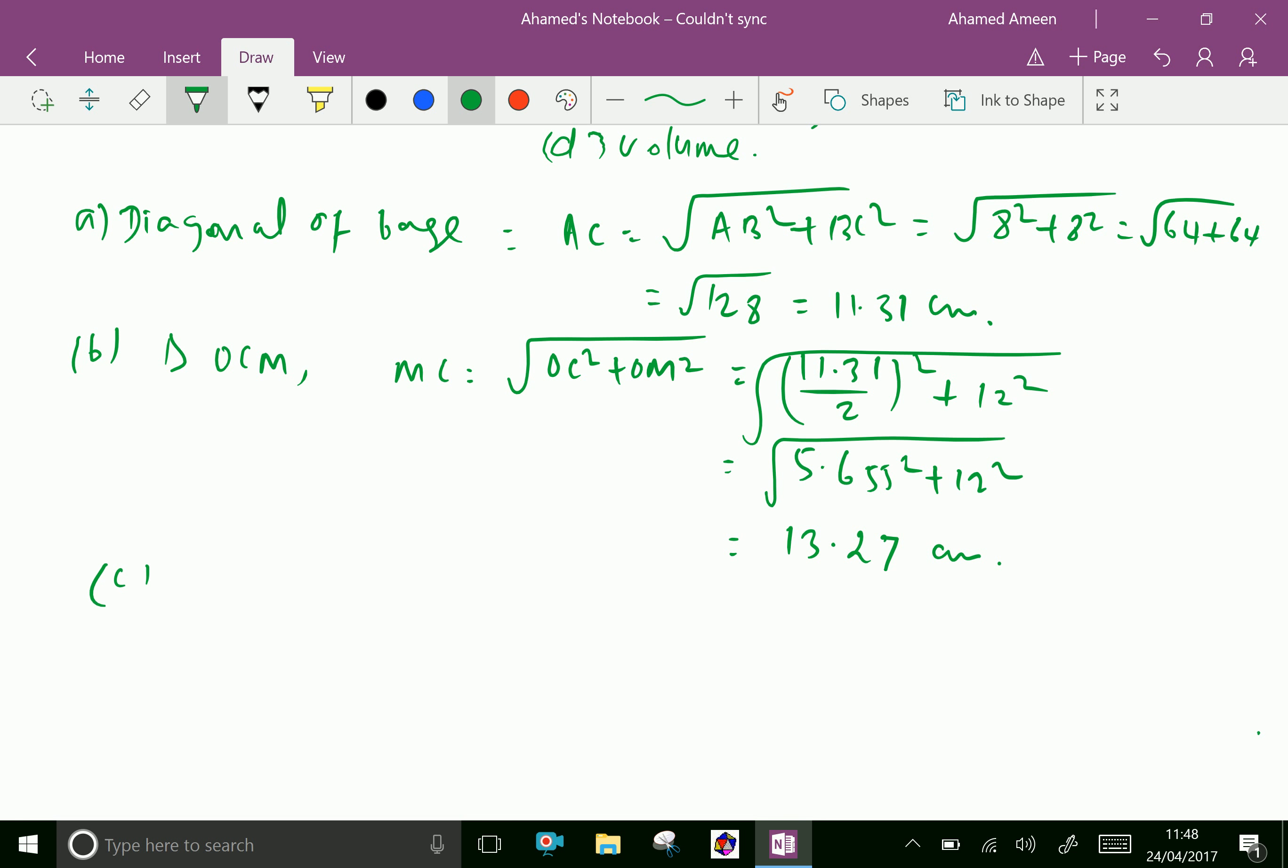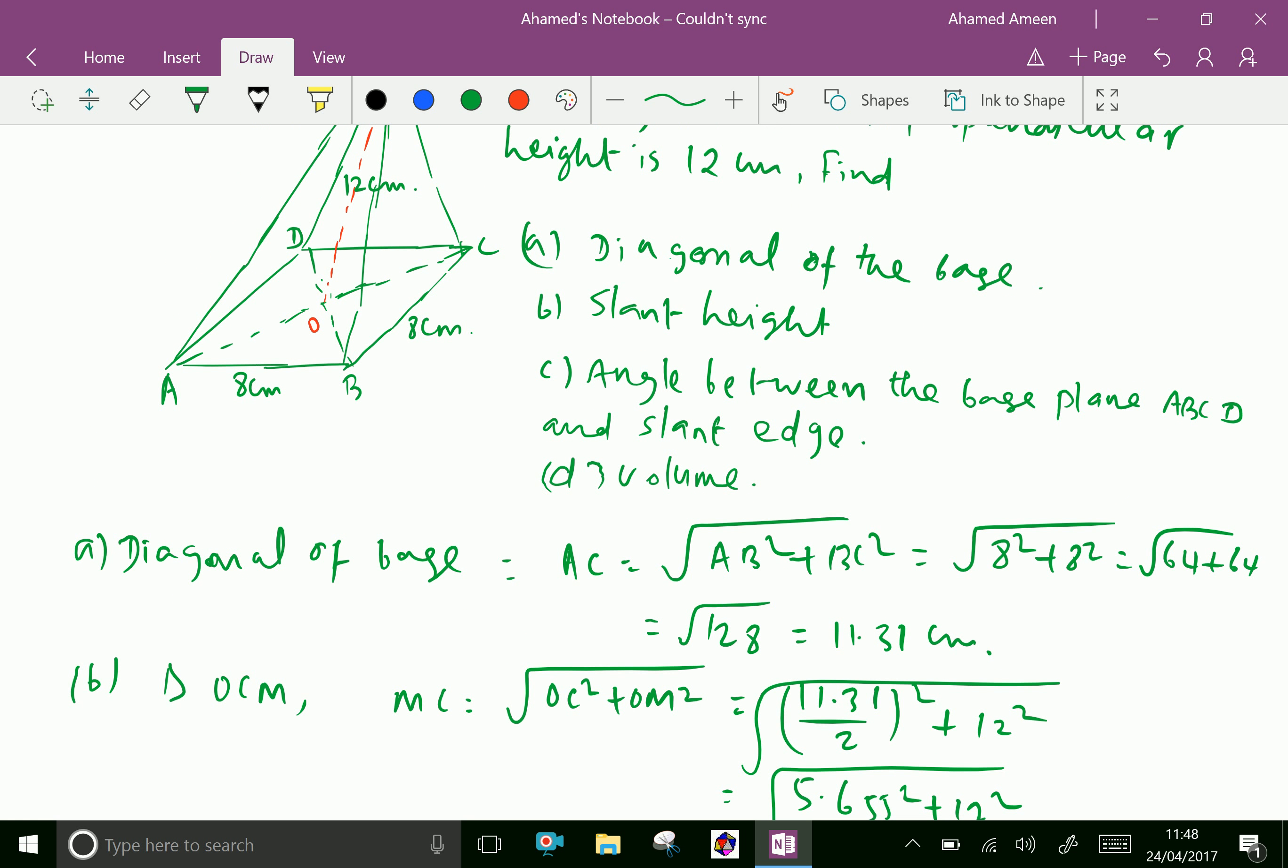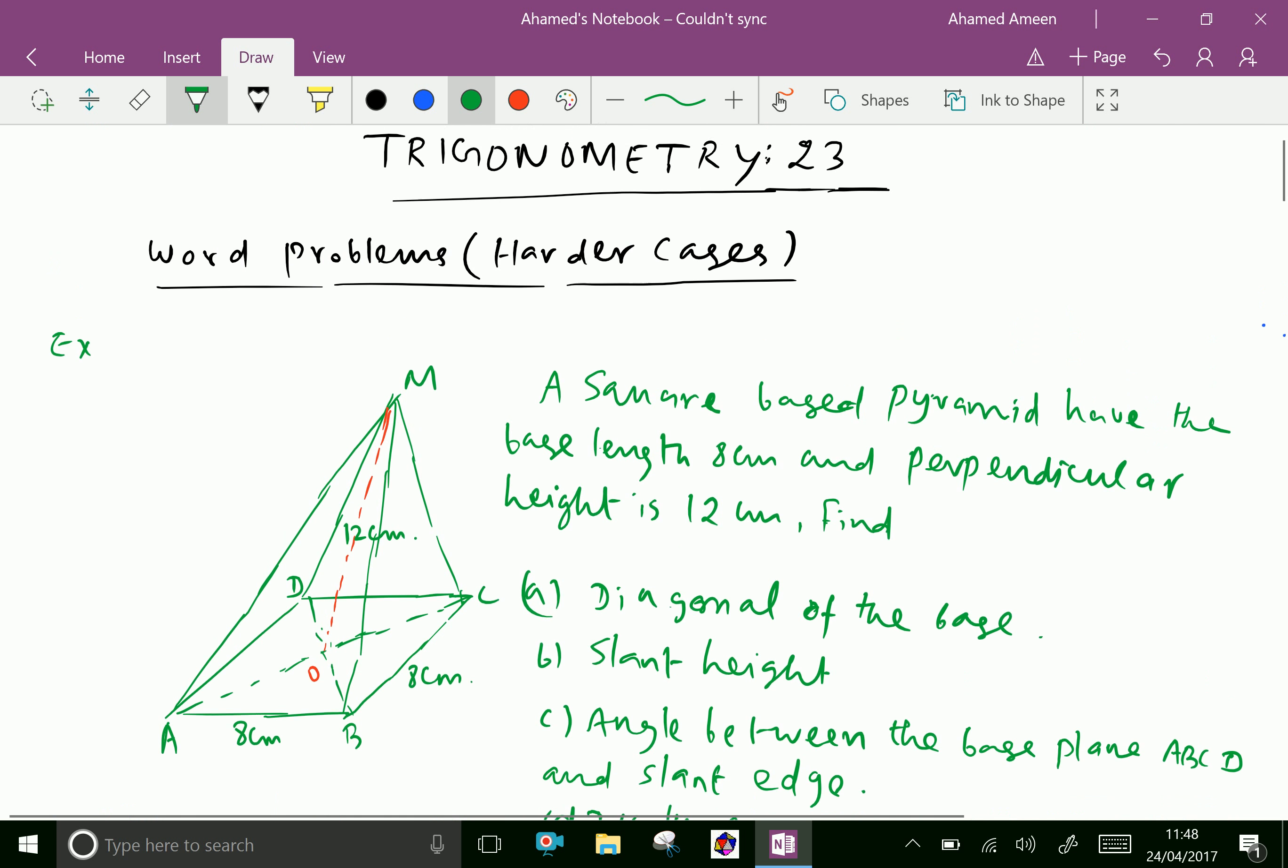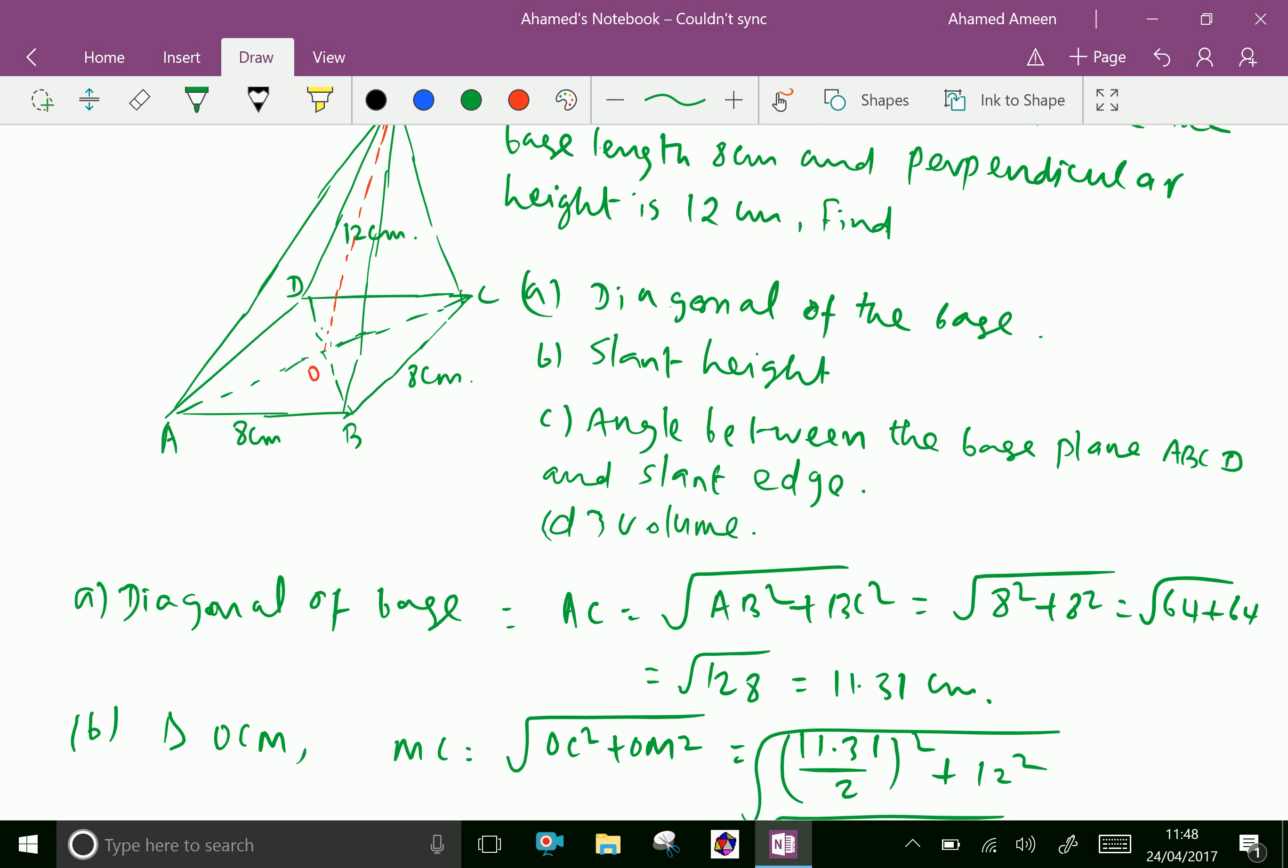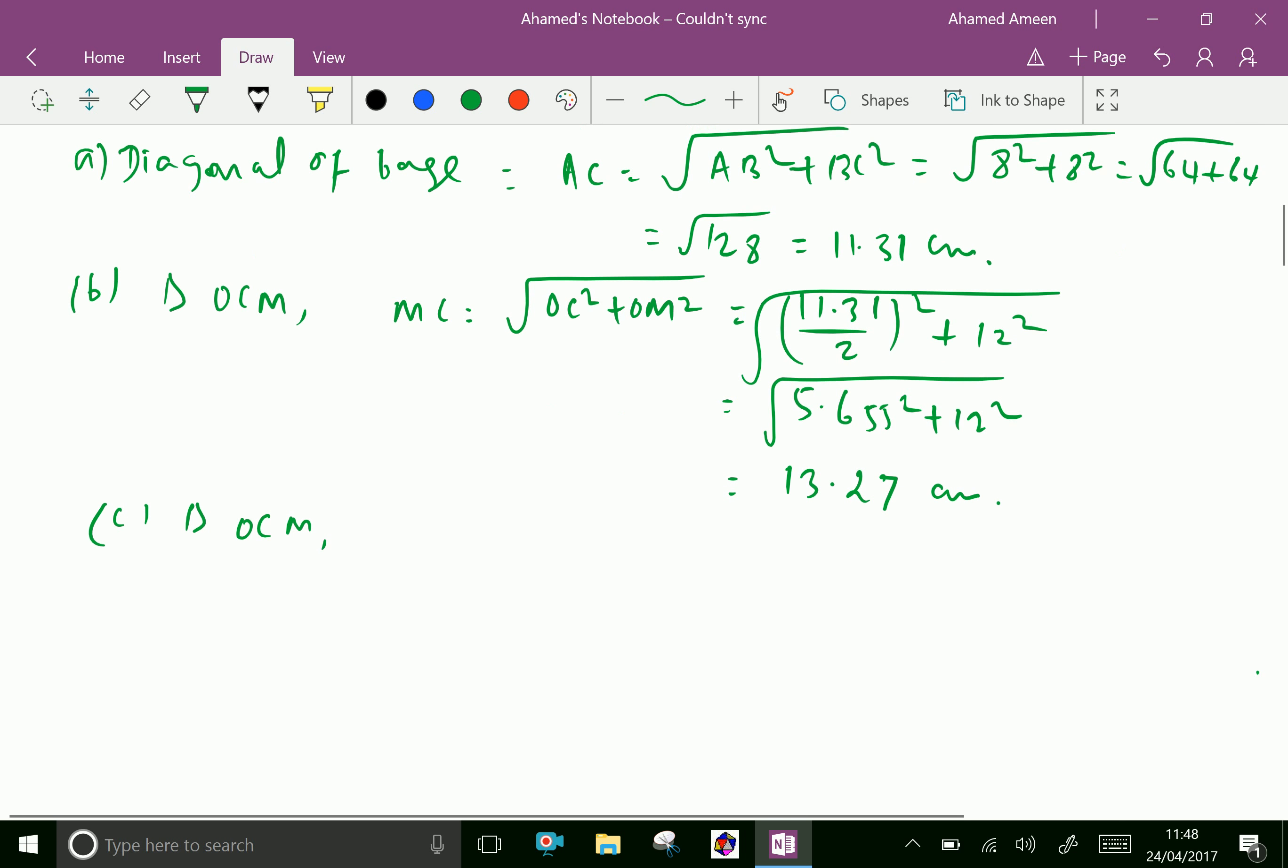Now the angle between the base plane ABCD and slant edge. In triangle OCM, we use tan theta where theta is the angle.